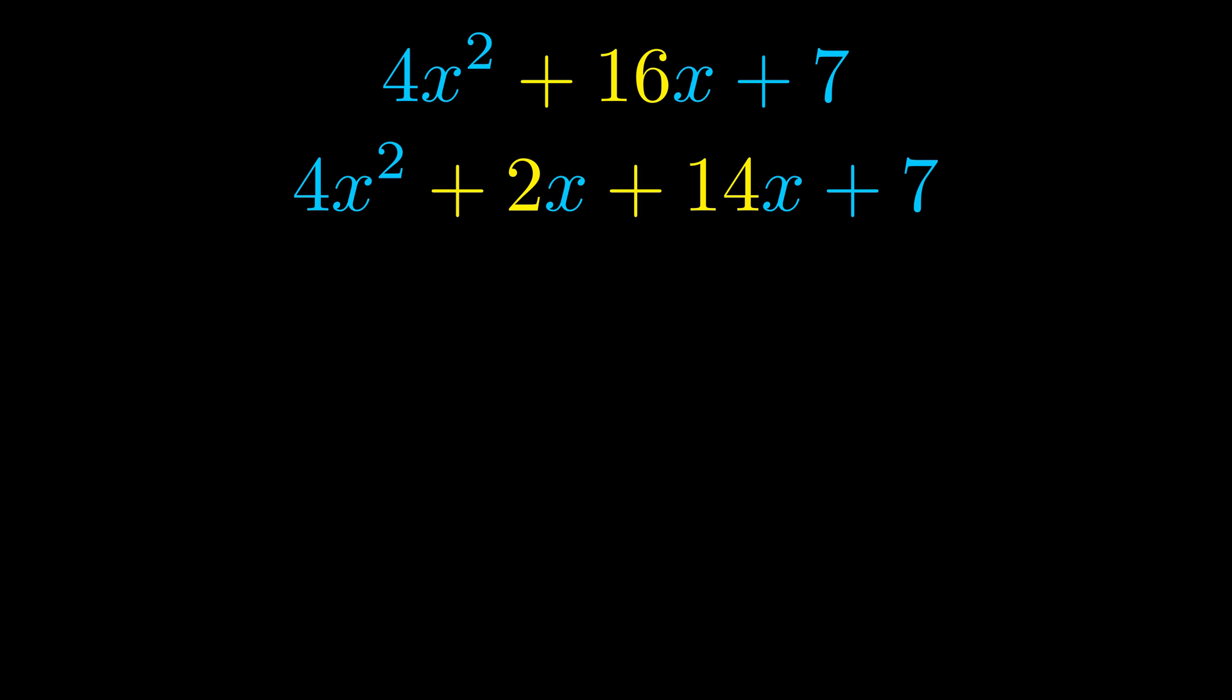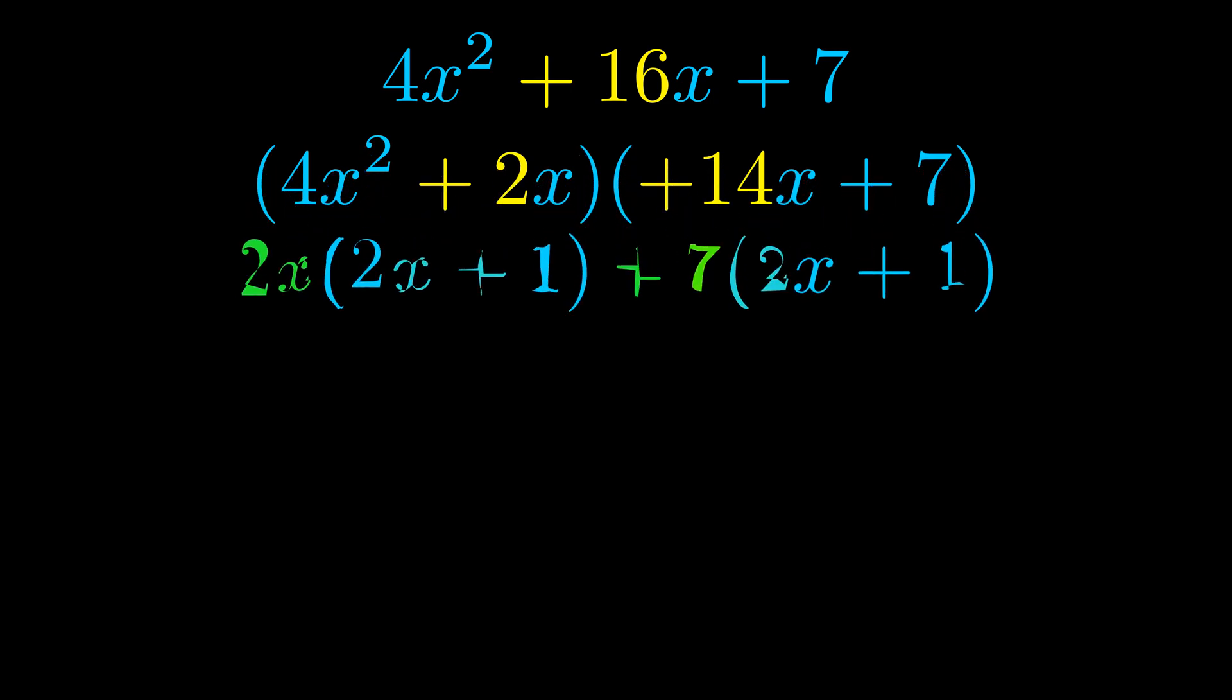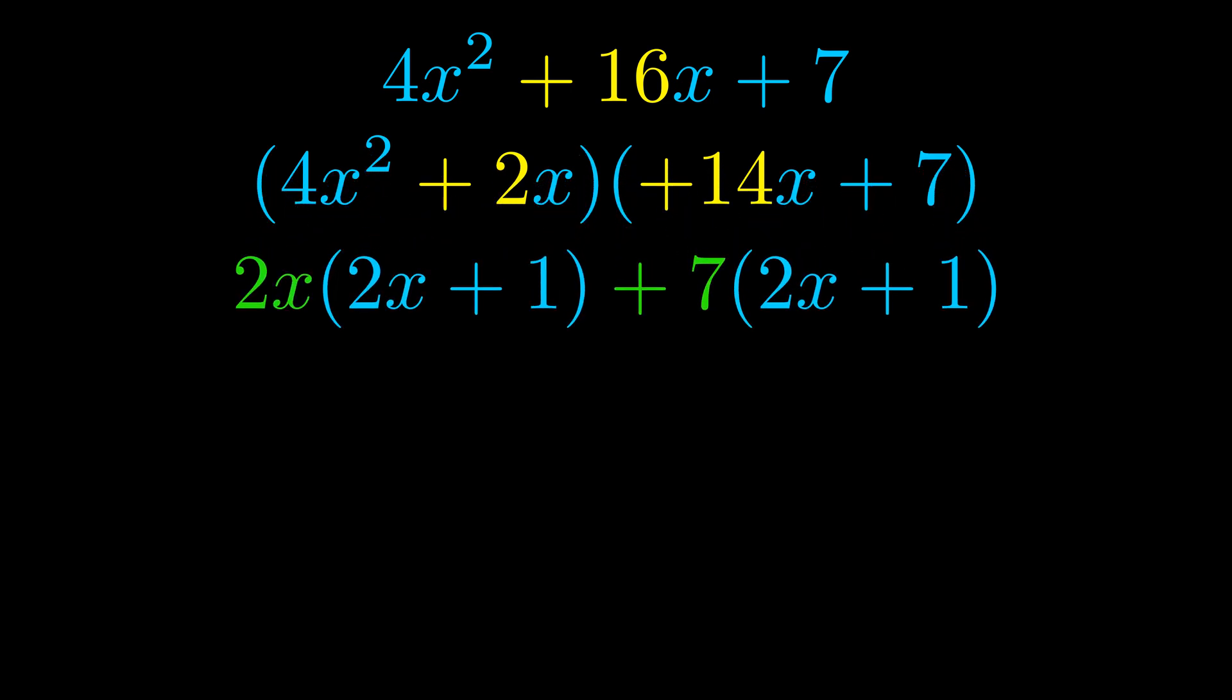Once we've done this we go ahead and we put parentheses around the first term and the last term. And we do that so that we can take the greatest common factor out of both terms. We can see the greatest common factor is now outside in green.